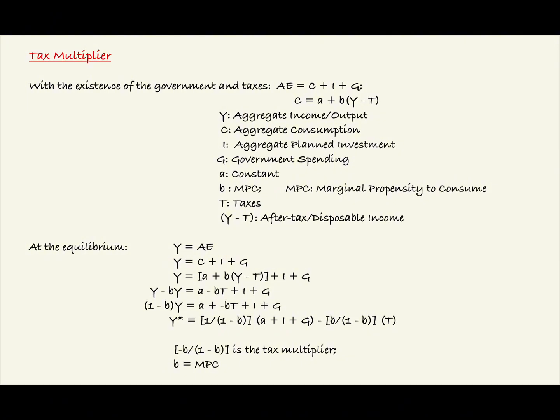We can break down the aggregate consumption, or C, into A plus B times the quantity Y minus T. So now we have Y equals A plus B times the quantity Y minus T plus I plus G.